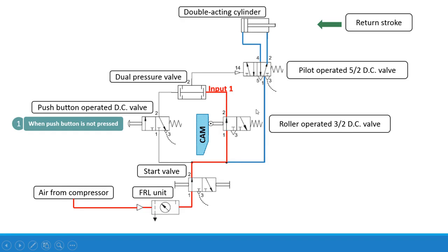For this particular arrangement there is a retraction of the piston in the double acting cylinder — that is the return stroke. Now we have to understand how this circuit works. Air from the compressor — as indicated by the red line showing the flow of air — enters into the FRL unit and then into the left envelope of the start valve.